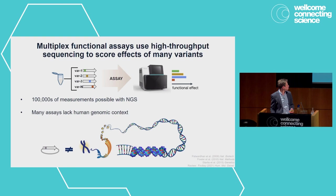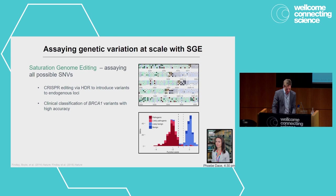In 2014, we developed a method called saturation genome editing, which is a tool to put all variants in the genome in a single genomic region up to about 150 bases. We first demonstrated the clinical utility of this on BRCA1 in 2018, and Phoebe's going to talk more about our work on that more recently later this afternoon.